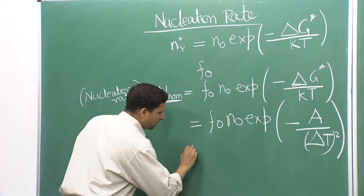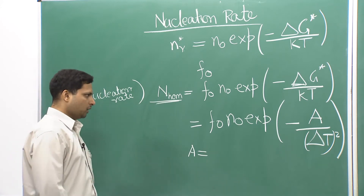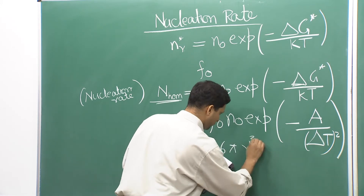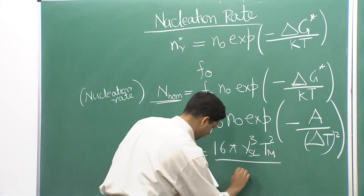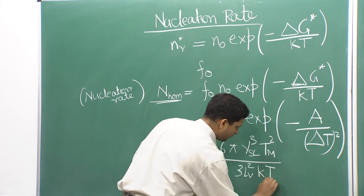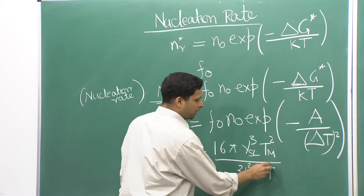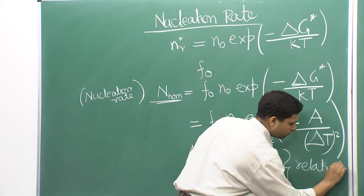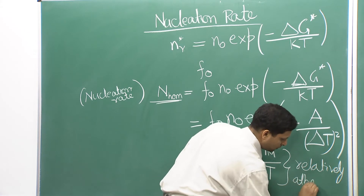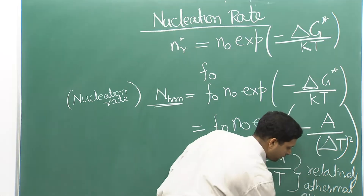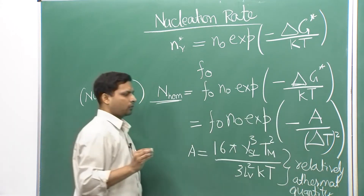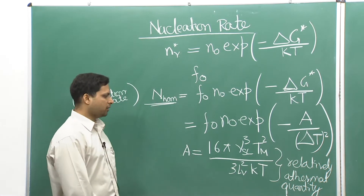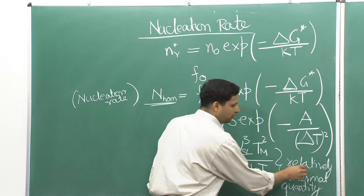Why we write it this way is because A is a relatively athermal quantity. You might say there is a T term in there, so how can it be athermal? That is where we say 'relatively.' If you look at ΔT with respect to T, the T term is actually athermal.